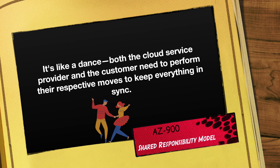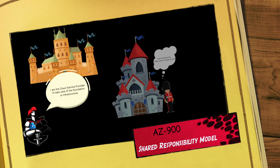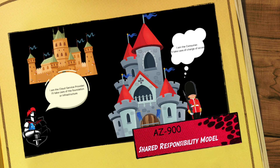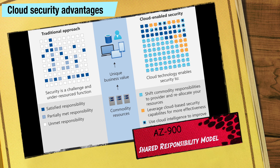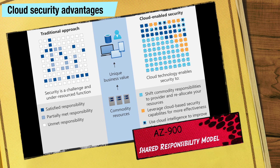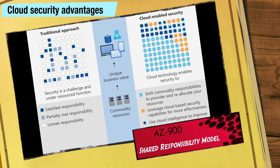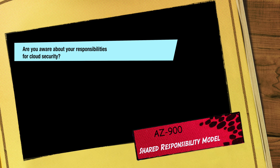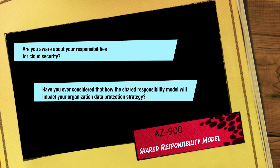Imagine the cloud service provider as the guardian of the fortress, protecting the foundation and infrastructure. Meanwhile, the customer takes on the role of the gatekeeper, managing access, securing applications, and safeguarding data within that fortress. By understanding this shared responsibility model, you can better assess your security needs and implement appropriate measures to protect your valuable assets in the cloud. Are you aware of your responsibilities when it comes to cloud security? Have you considered how this model impacts your organization's data protection strategy?